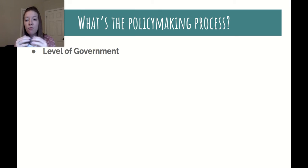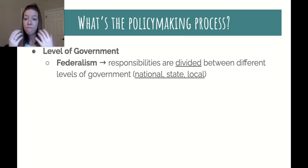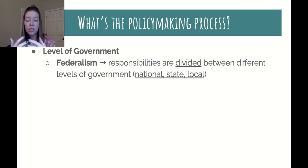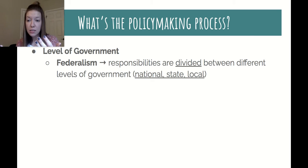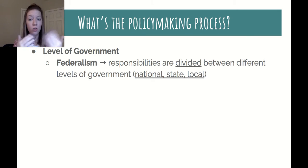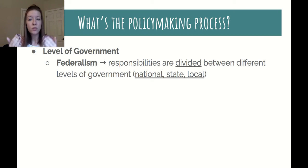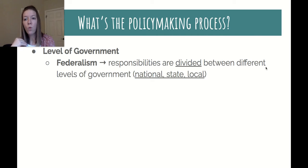The level of government is important in our system because we are a federalist system. Federalism means that responsibilities are divided between different levels of government, so policies take place at those levels as well. There are just local issues that local governments take care of, state issues, and of course national issues, so you have to think about where the public policy is being made and who it affects.